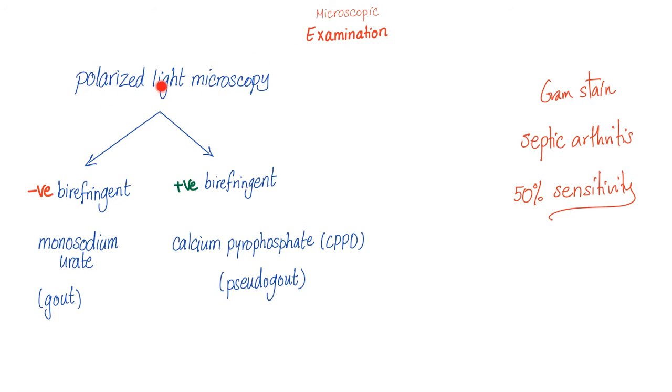Microscopic examination by the plain polarized light. Negative birefringent, the monosodium urate in cases of gout. Positive birefringent, cases of pseudogout called calcium pyrophosphate dihydrate crystals. The gram stain should help with septic arthritis, but it's only 50% sensitive, which is piece of trash because this is just like flipping a coin.